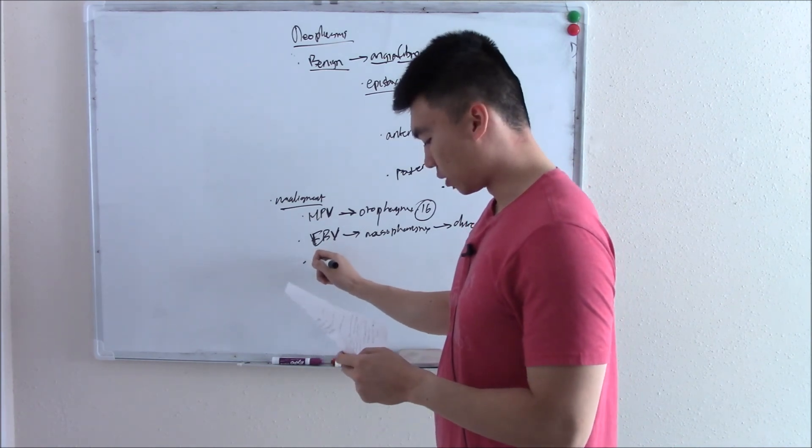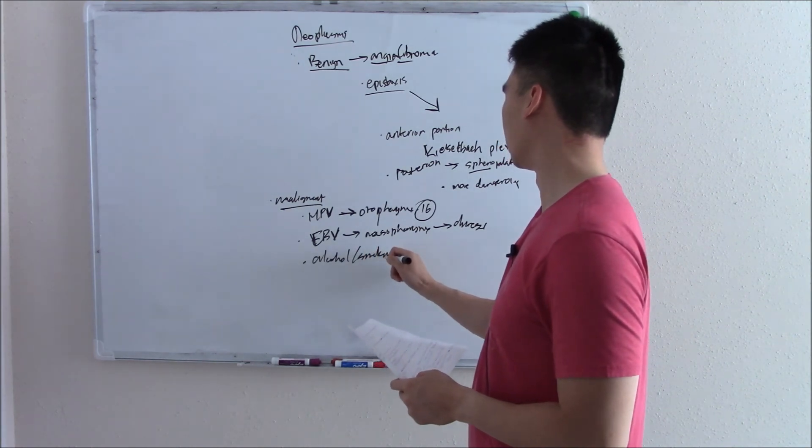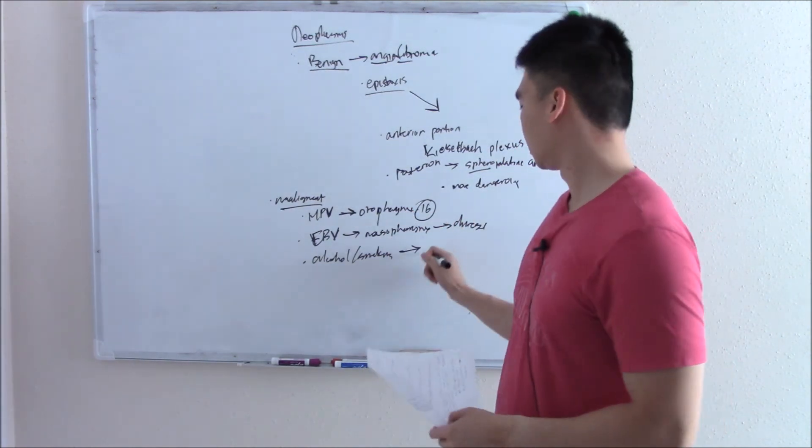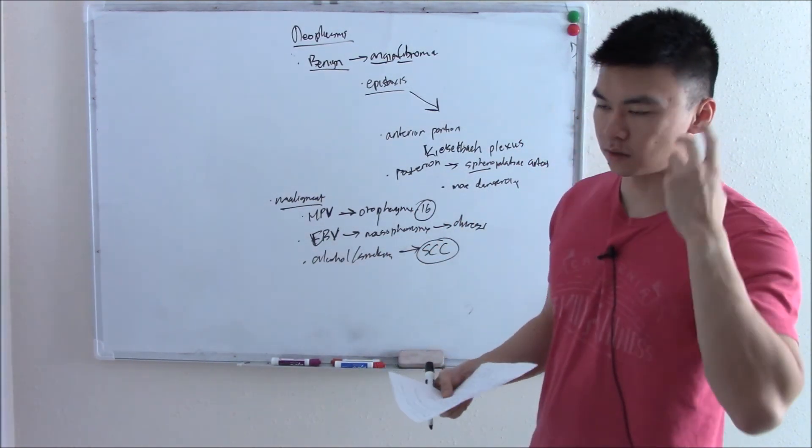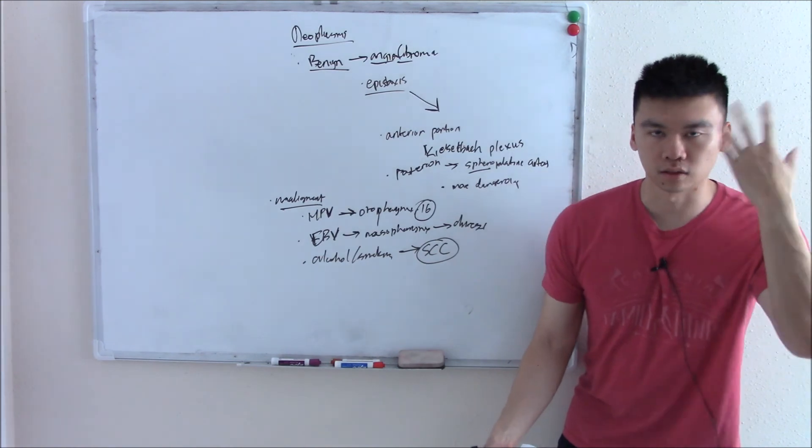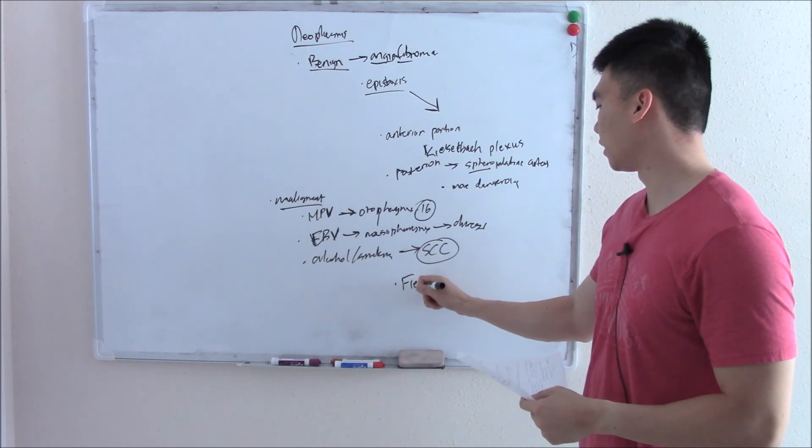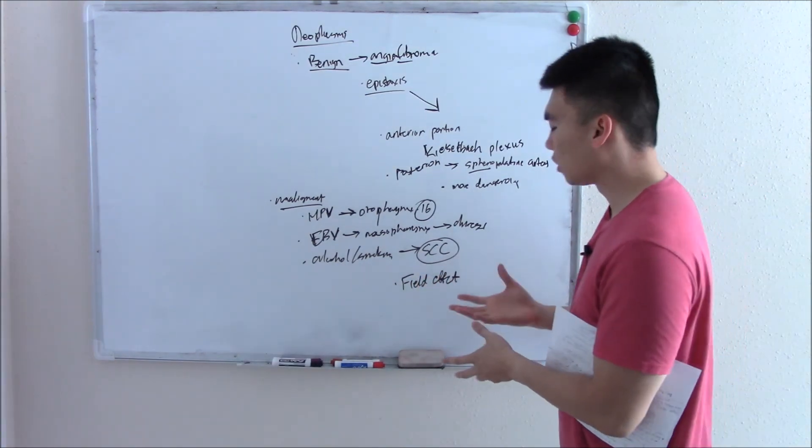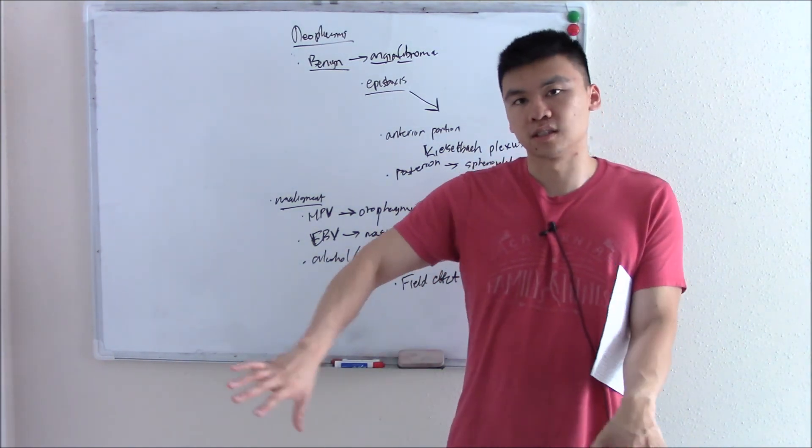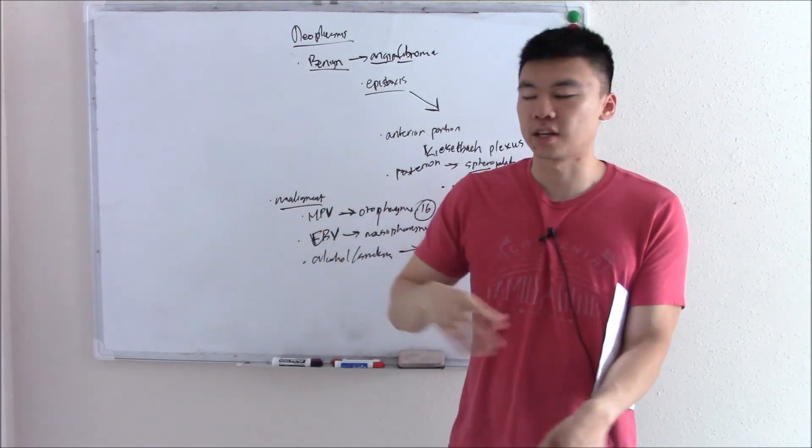And then last but not least, probably the most common of all is things like alcohol and smoking. These are just carcinogens. And when you ingest them, the first thing they touch is your mouth, right? So they can cause squamous cell carcinoma. That's the lining of your oropharynx in your mouth. Cause it anywhere along that tract. And one thing you should know is that field effect is common. What is the field effect? Field effect is when you bask an area, kind of marinate an area with carcinogens. Because that whole area is covered with carcinogens, then you can have different tumors pop up independently of each other. That's the field effect.